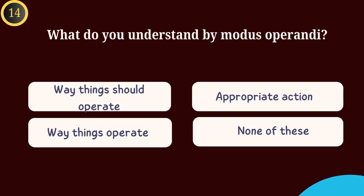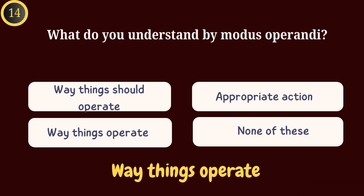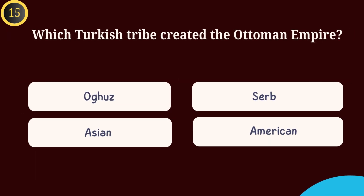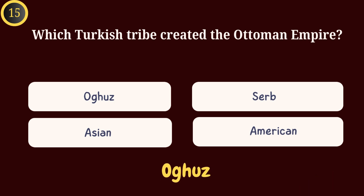Question 14: What do you understand by modus operandi? Answer: The way things operate. Question 15: Which Turkish tribe created the Ottoman Empire? Answer: Oghuz.